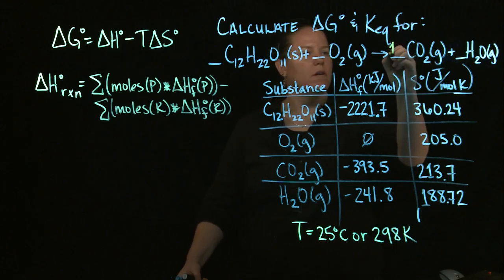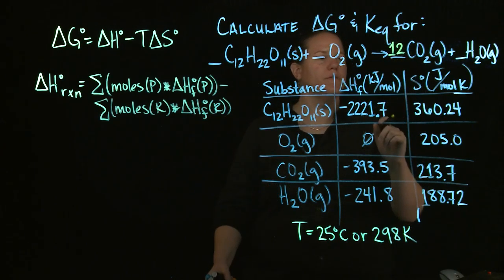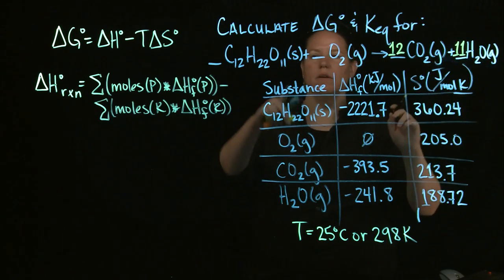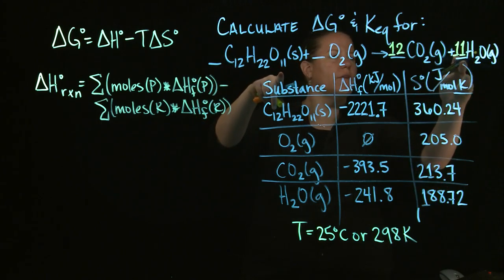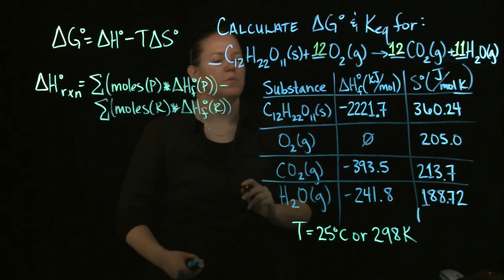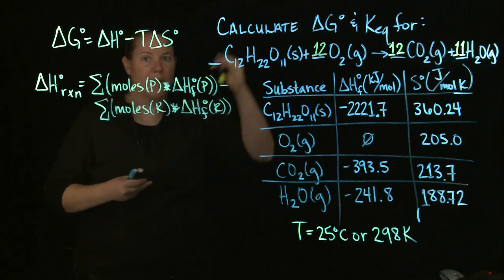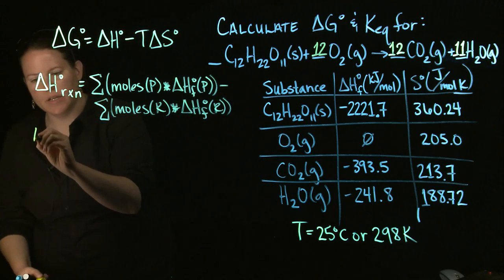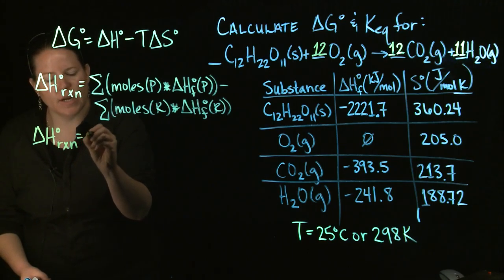So let's balance it. I have 12 C's over here, I need 12 C's over here. I have 22 H's which means I need 11 H's here. Notice I have 11 O's and I don't want to change this number, so that 11 O's cancels out with those 11 O's which means that I need a 12 right here as well. So in terms of doing this now that I have my moles of reactants and products I can actually plug it in.